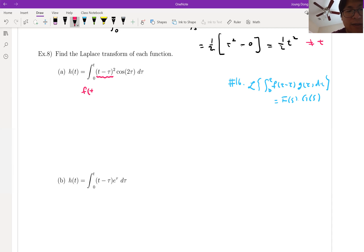We can say f(t) is t squared, because in this form we have t minus tau, and the t minus tau part is the t part. What about g(t)? That is cosine 2t.